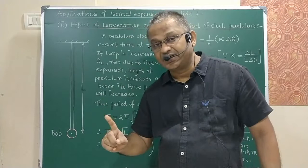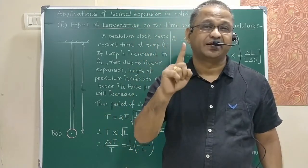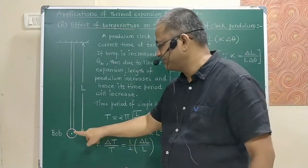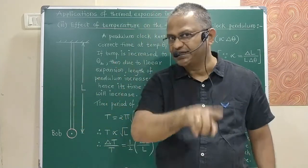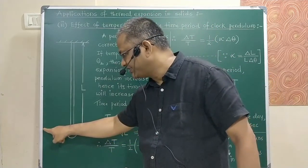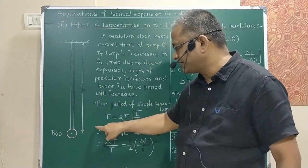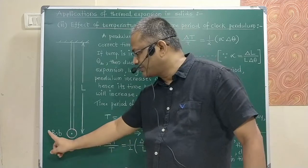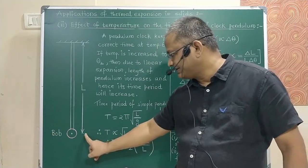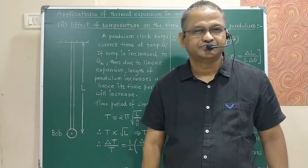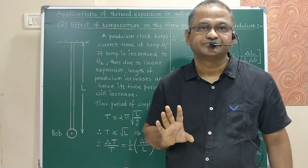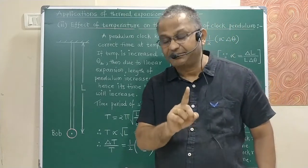The time taken by the bob to complete one oscillation is called the time period, denoted by capital T. One complete oscillation means the bob goes from left to center to right and back to left — that is one oscillation. The time taken to return to the starting position is the time period.